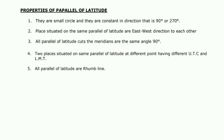Properties of parallels of latitude: Number one — they are small circles and they are constant in direction, that is 090 degrees or 270 degrees. Number two — places situated on the same parallel of latitude are in an east-west direction to each other. Number three — all parallels of latitude cut the meridians at the same angle, that is 90 degrees. Number four — two places situated on the same parallel of latitude but at different points have different UTC and LMT — UTC stands for Universal Coordinated Time and LMT means Local Mean Time. Number five — all parallels of latitude are rhumb lines because they have a constant direction of 090 or 270.